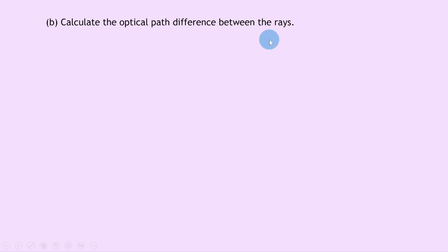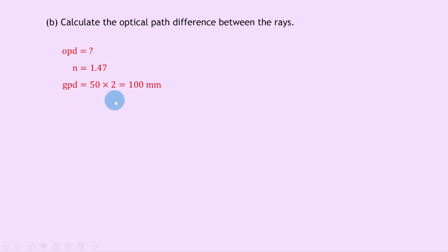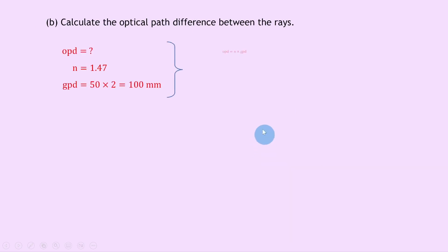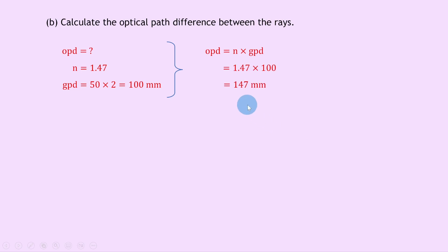Part B says to calculate the optical path difference between the rays. The refractive index is 1.47 and the geometrical path difference is 50 × 2 = 100 millimeters, because ray Y travels an extra 50mm across the block and 50mm back compared to ray X. So optical path difference = n × geometric path difference = 1.47 × 100 = 147 millimeters.